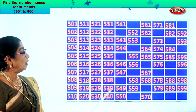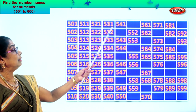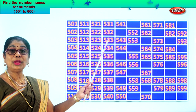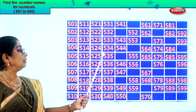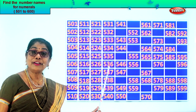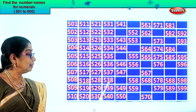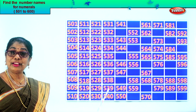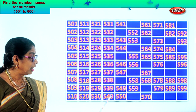Good. Now let's read together: 531, 532, 533, 534, 535, 536, 537, 538, 539, 540.